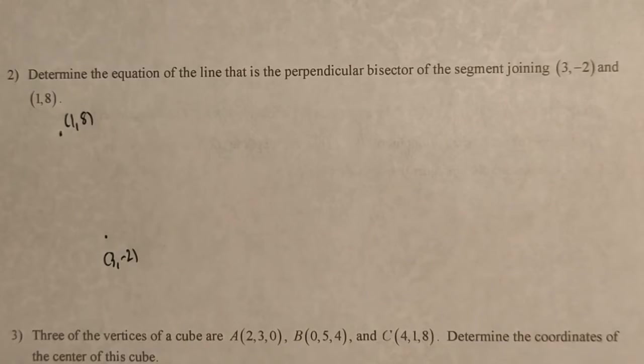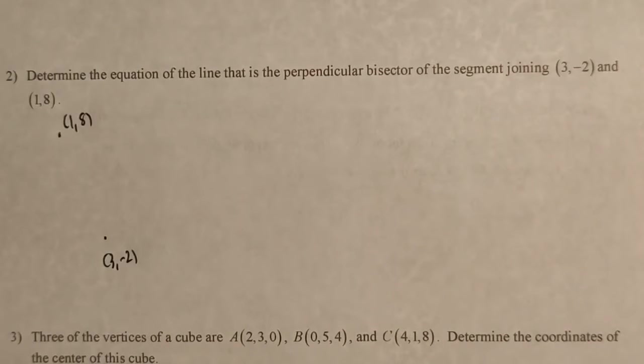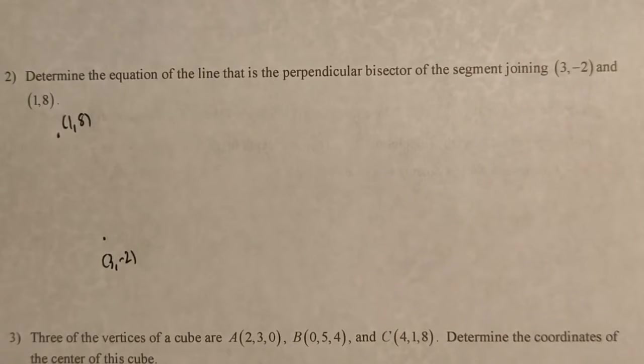All right, now let's have a look at the practice problems. We're going to look at problems 2 and 3. In this situation, problem 1, we're determining the equation of the line that is the perpendicular bisector of the segment joining 3, negative 2, and 1, 8.